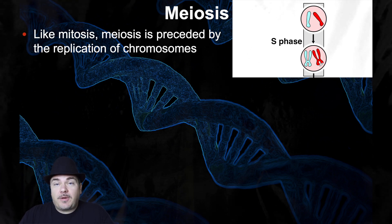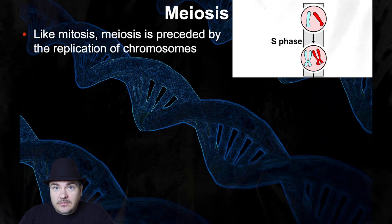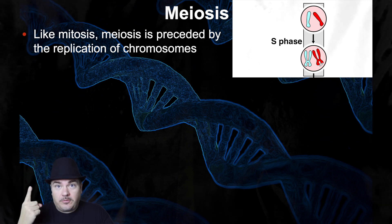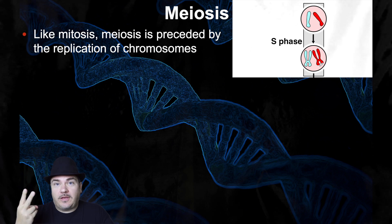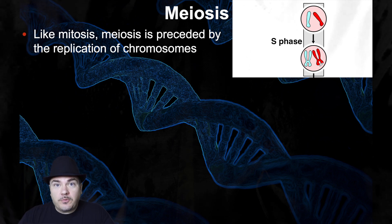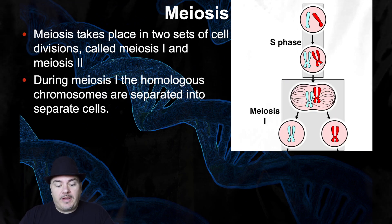One thing that's different about meiosis is you do cell division twice. For mitosis, you start with one cell, do cell division, and end up with two cells. For meiosis, you start with one cell and do meiosis one, which gives you two cells. Then you do meiosis two — you divide again — and those two cells turn into four cells. So we go through two rounds of cell division, starting with meiosis one.